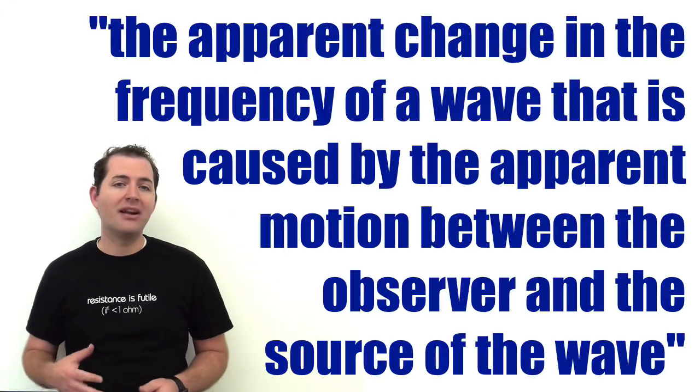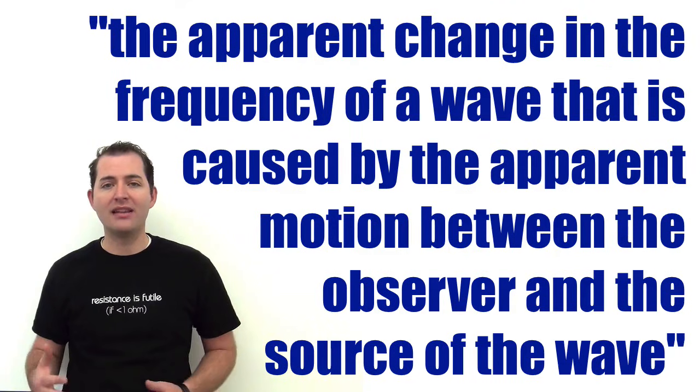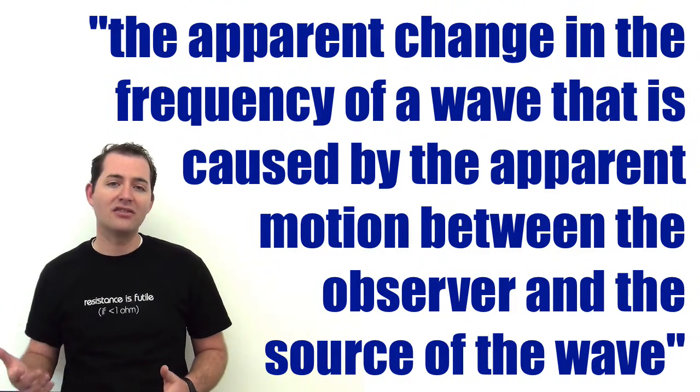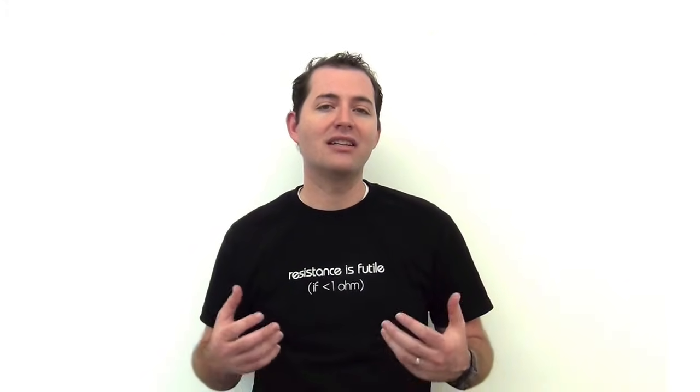The Doppler Effect is the apparent change in the frequency of a wave that's caused by the apparent motion between the observer and the source of the wave. To really understand what this means, we need to start with an example.